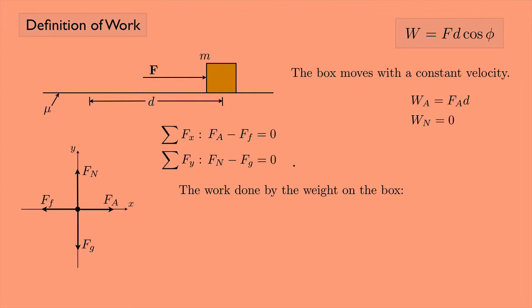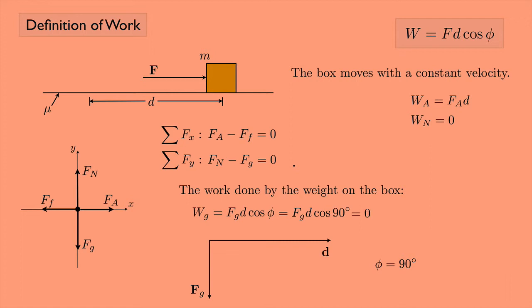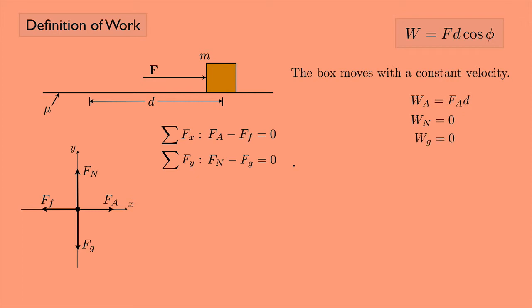The work done by the weight W_g equals the weight times D times the cosine of phi. The weight goes straight down and the displacement goes to the right, so the angle is again 90 degrees, and the cosine of 90 degrees is zero. Therefore the weight does no work on the box. When a force is perpendicular to the displacement, that force does no work on the object.